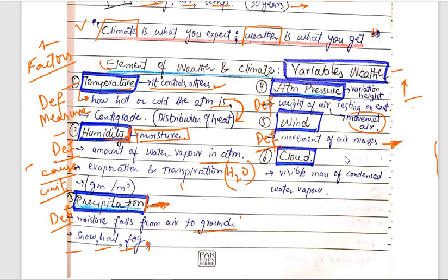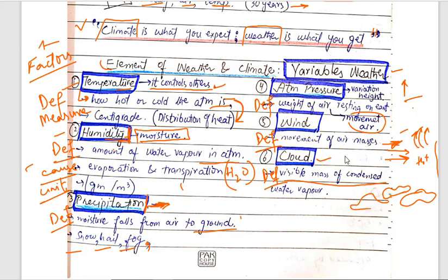Where evaporation is high, hot air rises up and cold air comes in to replace it. This movement of winds ultimately causes climate or weather to vary. The last factor is clouds — a visible mass of condensed water vapor. When water vapor condenses into a visible form, it creates clouds. Where there are more clouds, less heat reaches the surface, making the weather cooler and cloudier.